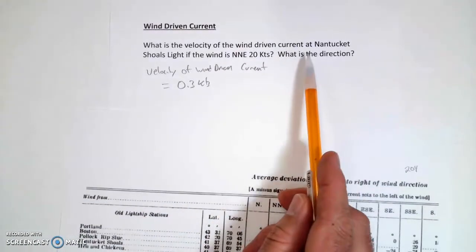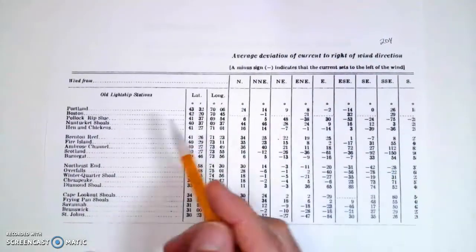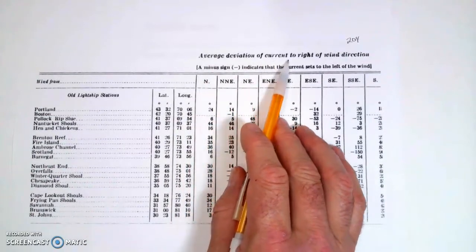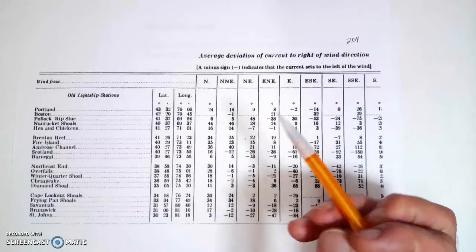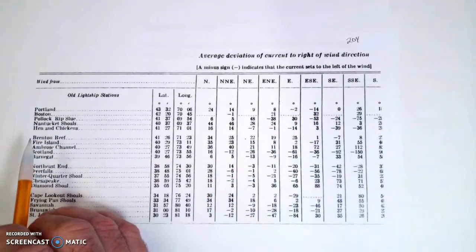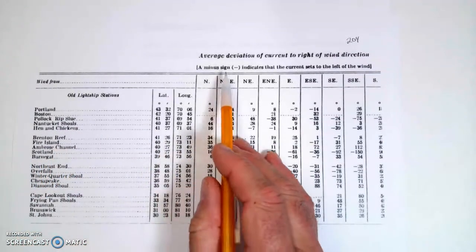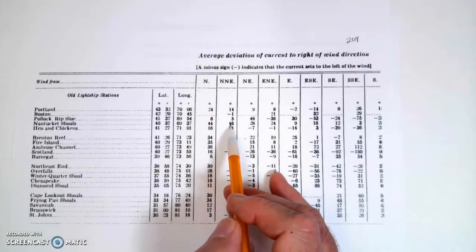So we are using Nantucket Shoals, and the wind is north-northeast. So what I'm going to do here is, this is average direct deviation of current to the right of the wind direction. So as we look at this, we're going to find our place. Our place is Nantucket Shoals, so this is our row. Then we're going to match up our wind direction, north-northeast, and we're going to pluck a number out, 046.